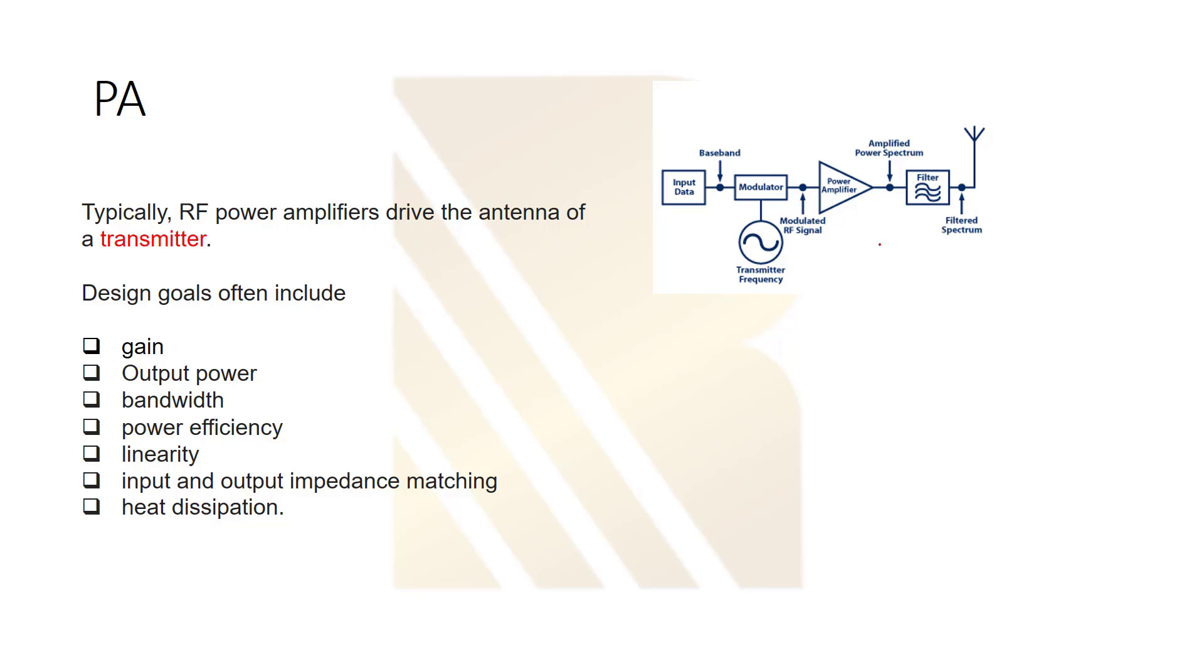And, sometimes, we have a filter after power amplifier, as you see in this figure. But, we can assume that this is the whole amplifier. We don't have to separate them, because sometimes, a filter is inside our power amplifier. And, based on this idea, we can say that, yes, RF power amplifier drives the antenna of the transmitter.